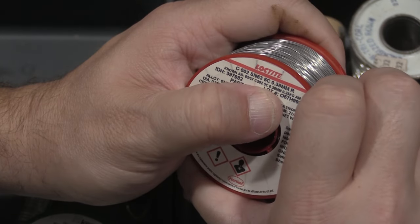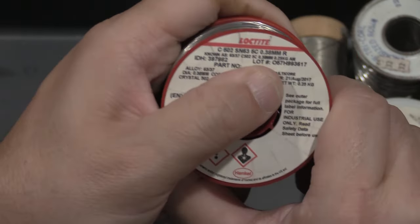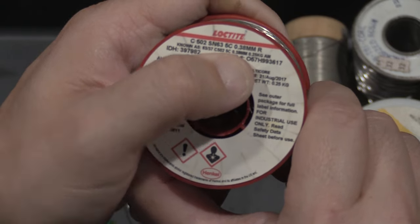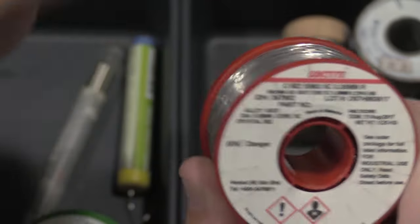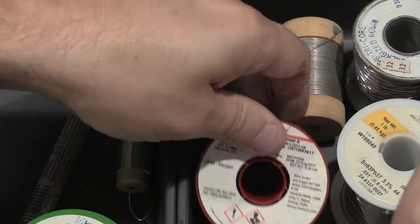This is one of the wheels that I use regularly on the bench, MG Chemicals. Kessler also makes great solder, multi-core. This Loctite stuff is actually pretty good too. This Loctite wheel is my thin stuff for doing surface mount and stuff like that.